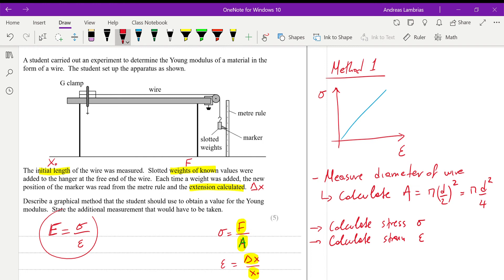Therefore, we're going to have a table with values of stress and strain. And we're going to use that to plot the graph. Alright, so once we plot the graph, then we can find the gradient. We can find the gradient, which is equal to the Young modulus. And this is the first way of doing it.